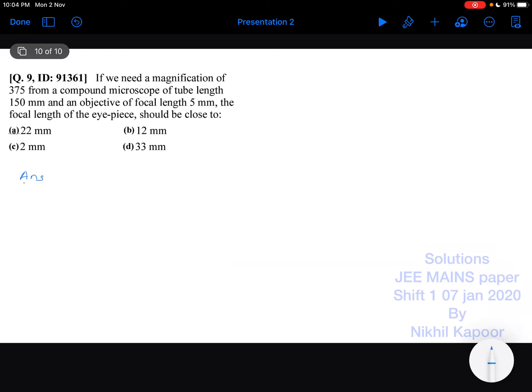So let's start with this ninth example. If we need a magnification of 375, so m is equal to 375, that is required for a compound microscope of tube length 150 mm. The objective focal length is 5 mm, and the focal length of the eyepiece would be how much?